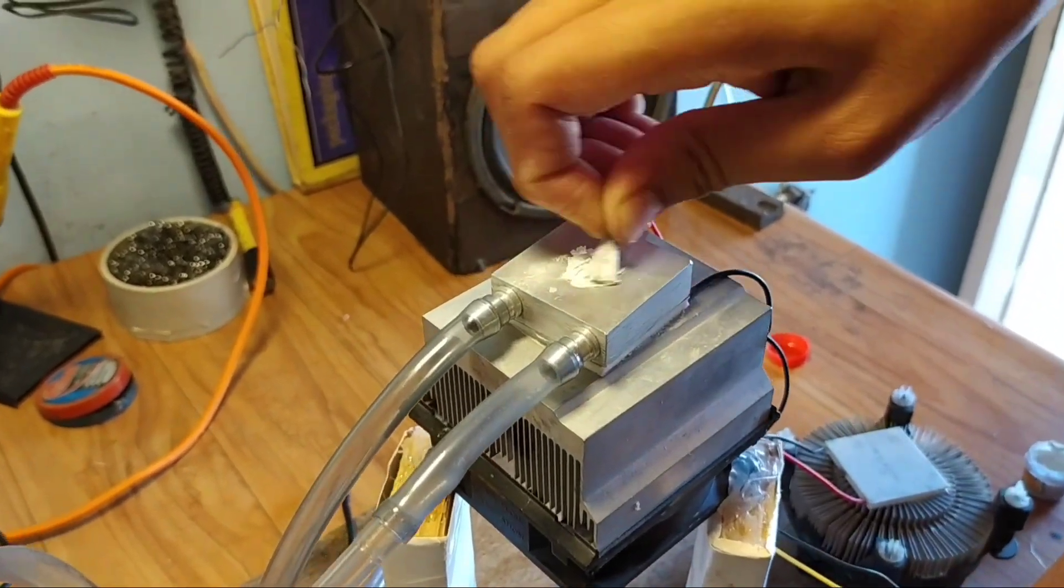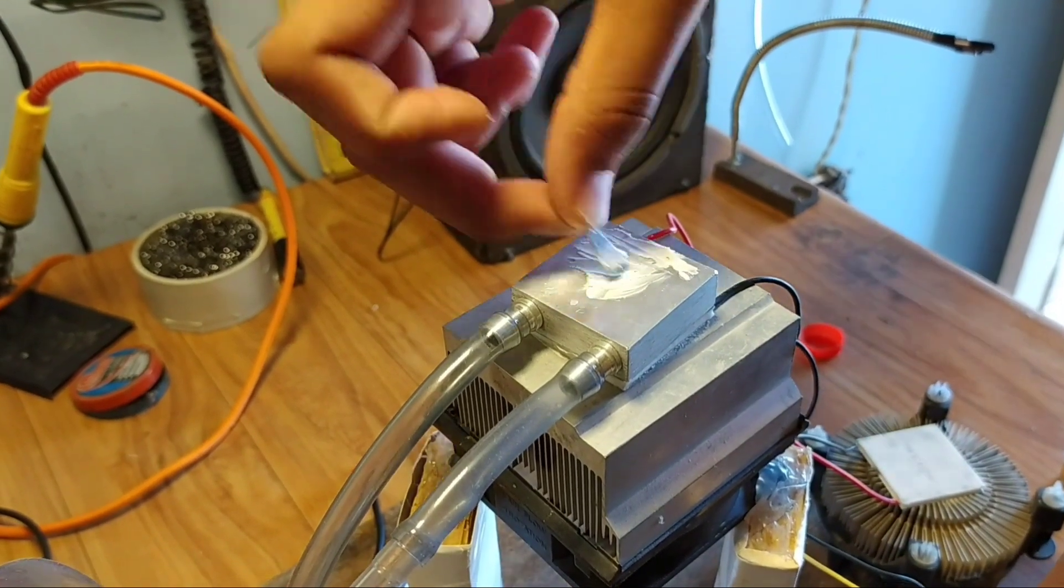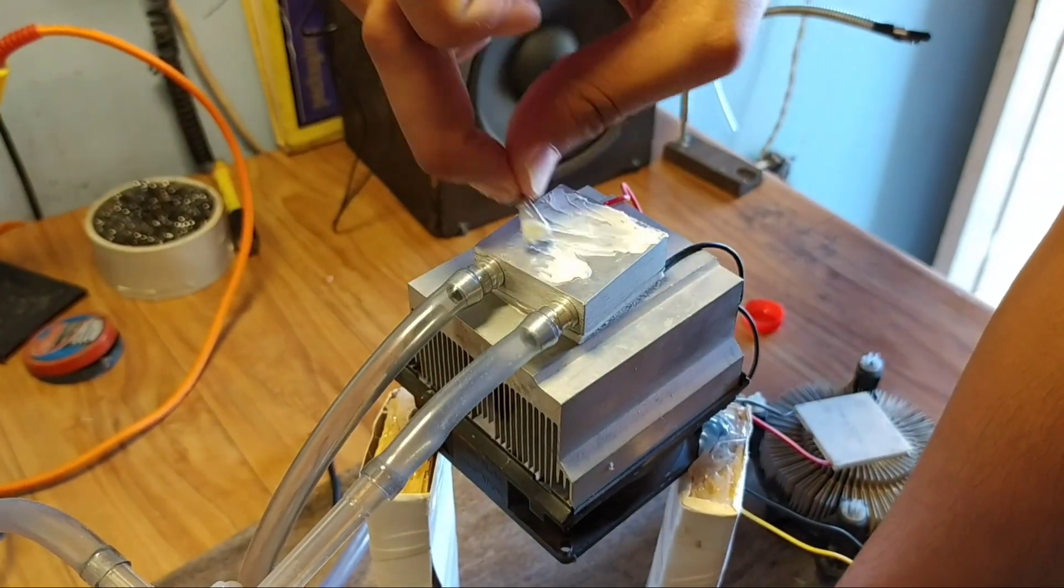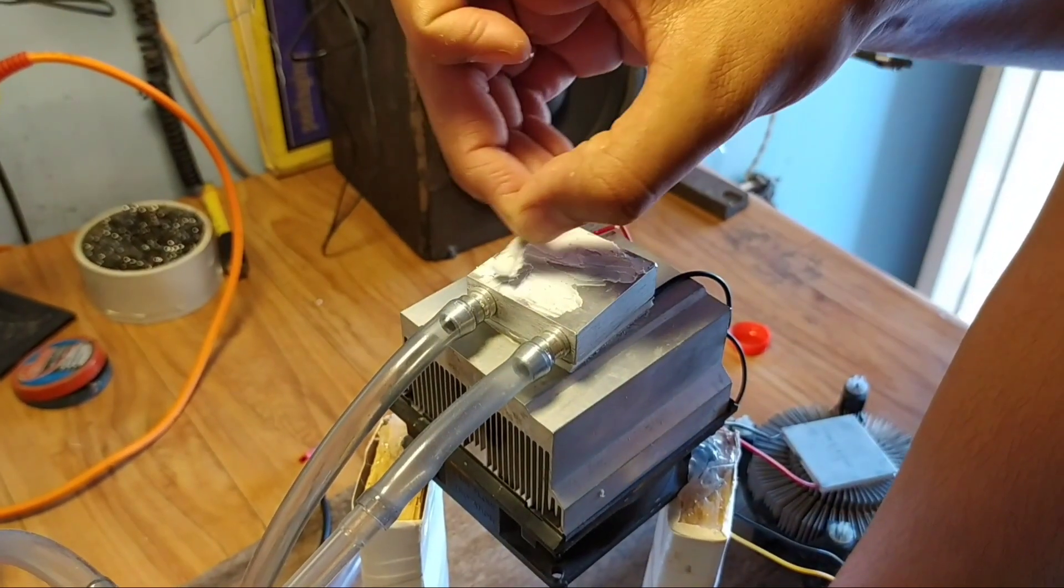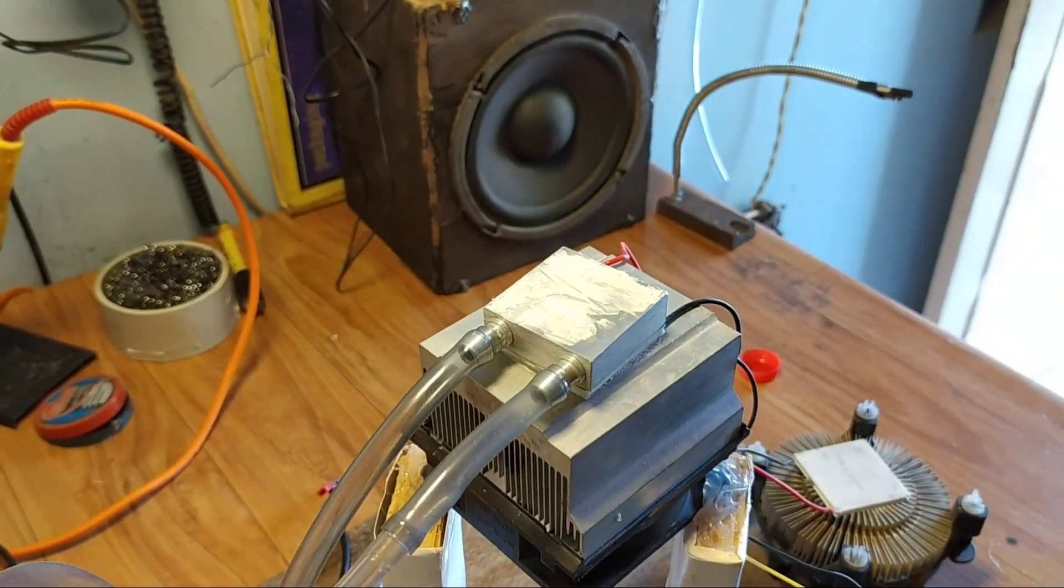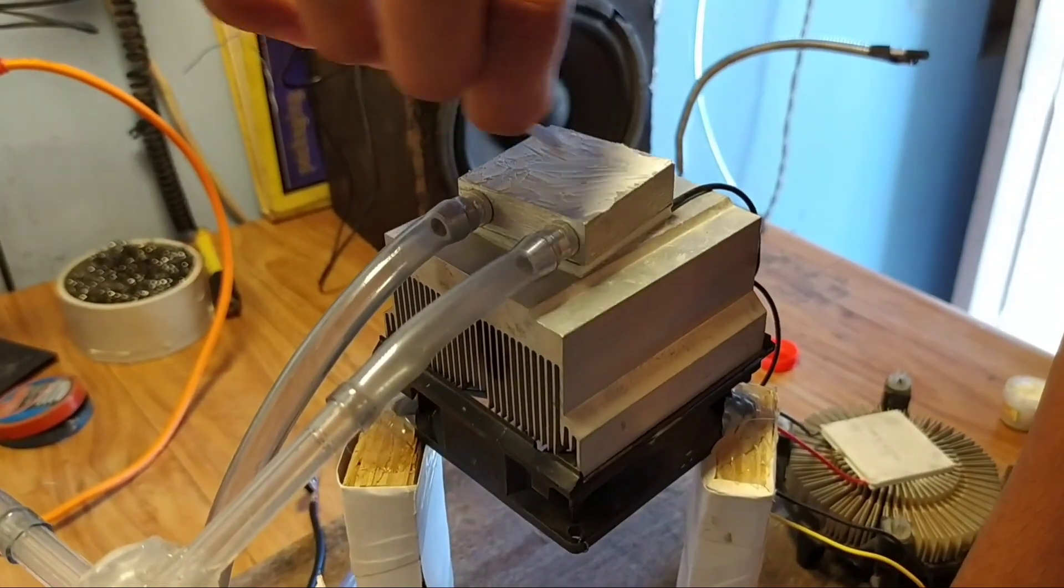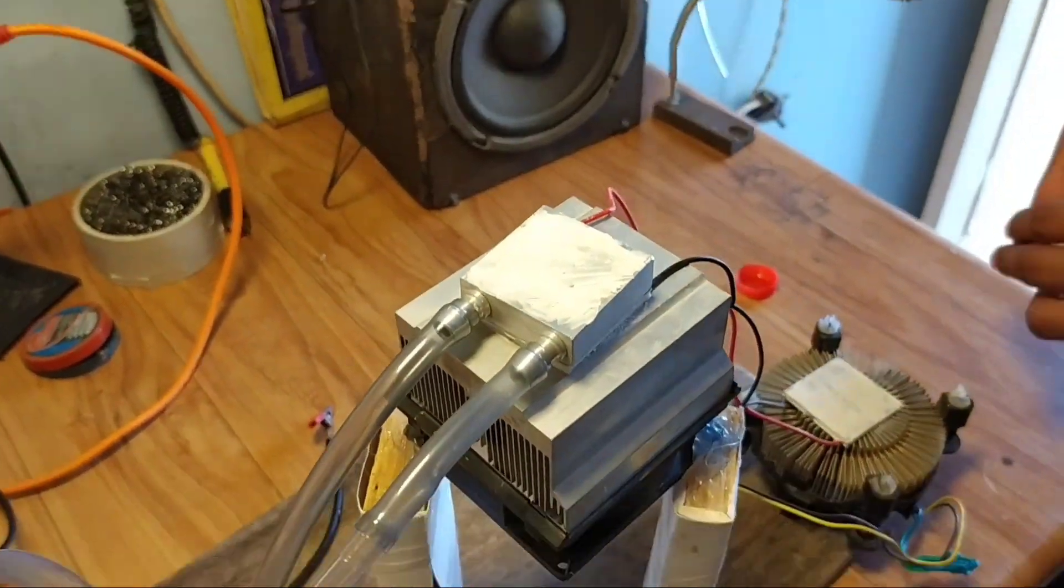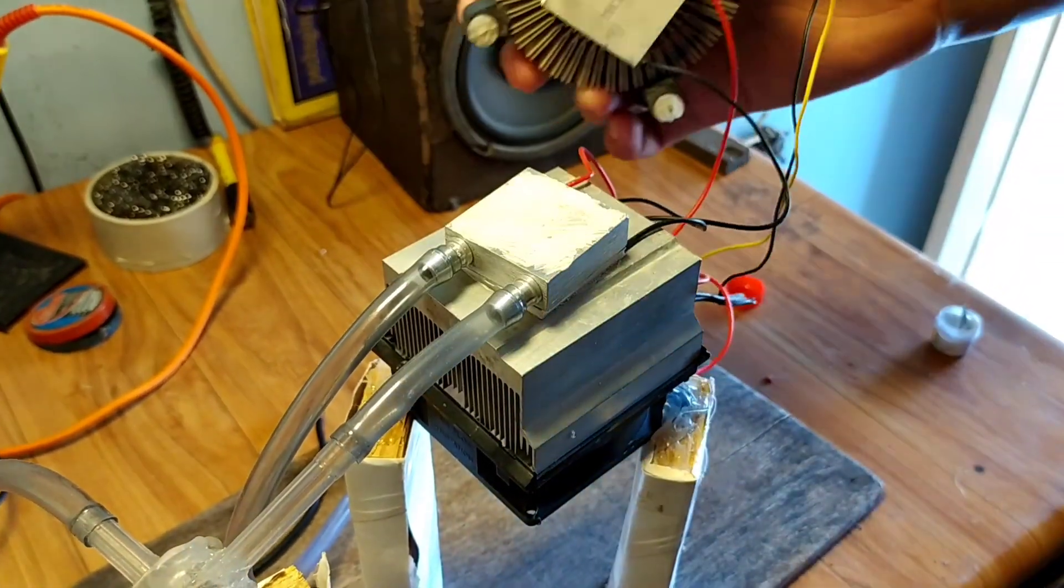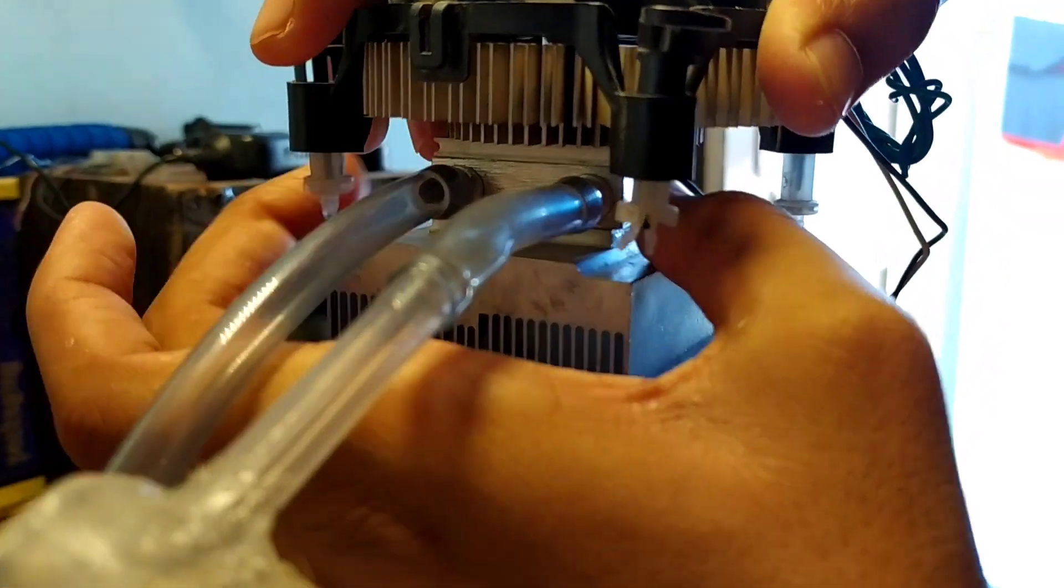Now repeat the process for second one. Put the another Peltier module, then arrange the water block. Done!